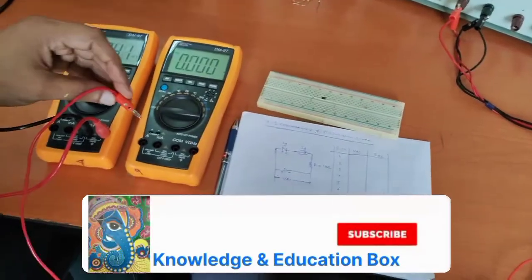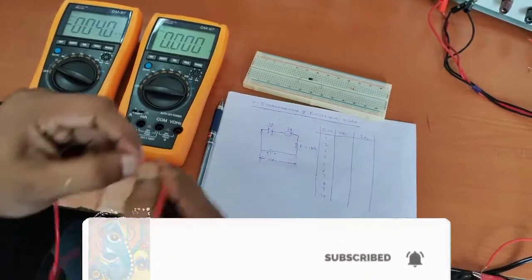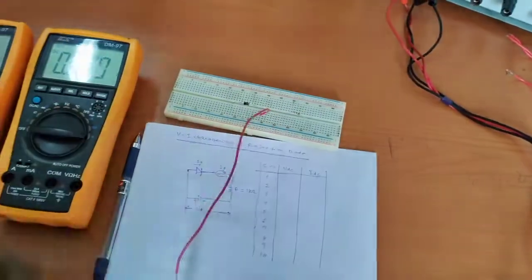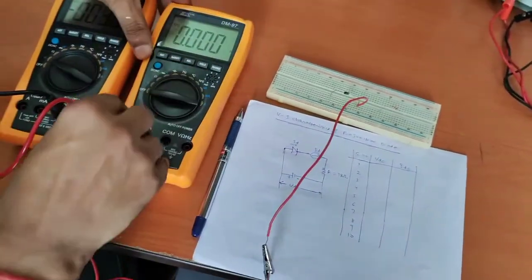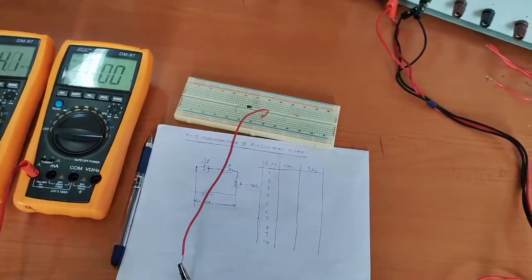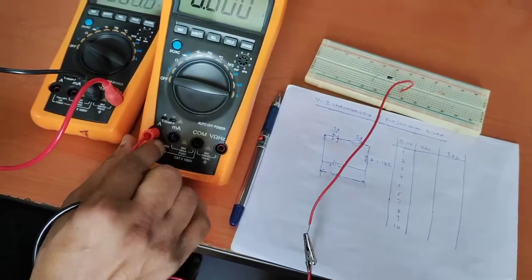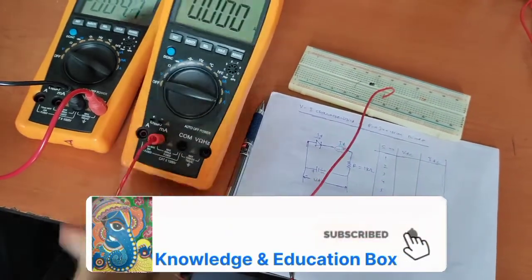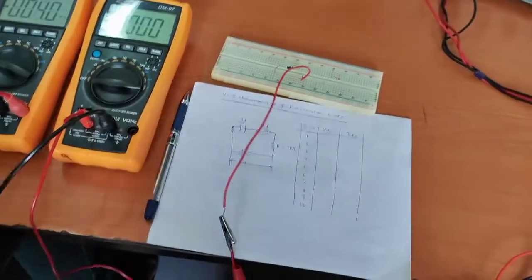The output of the diode will be taken from here and it will go to the current meter, so we have to measure the current. We can connect it here and take out the ground — this is the common terminal. This meter can be connected in ampere or milliampere range; now we are taking the milliampere range. This is common, so this will be returning to the circuit.